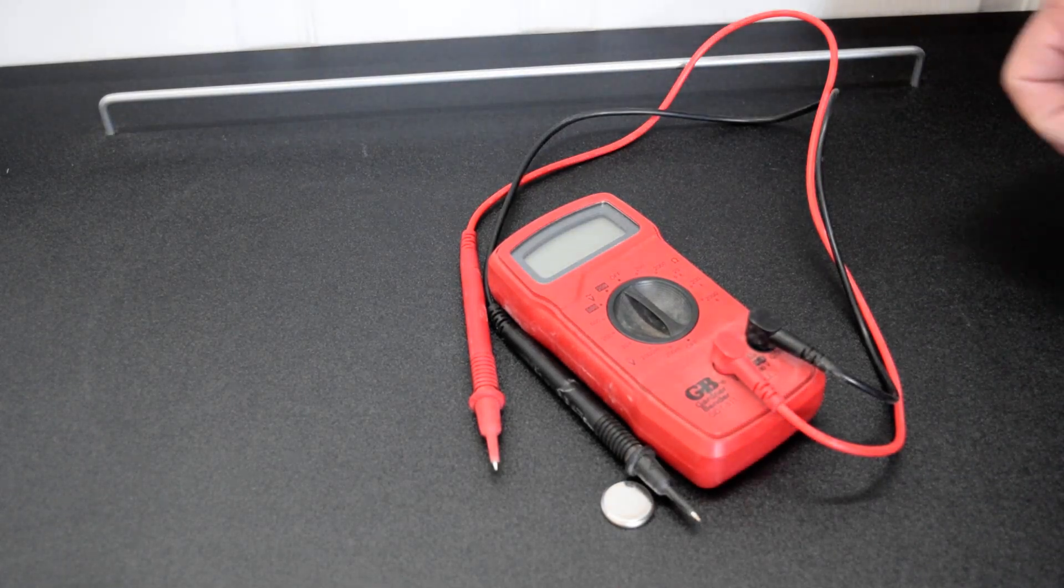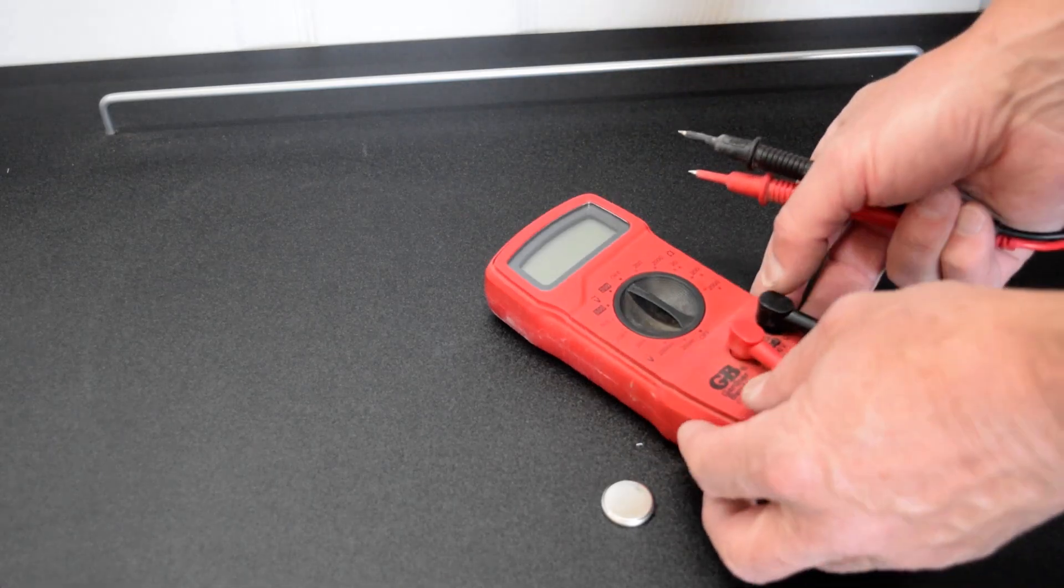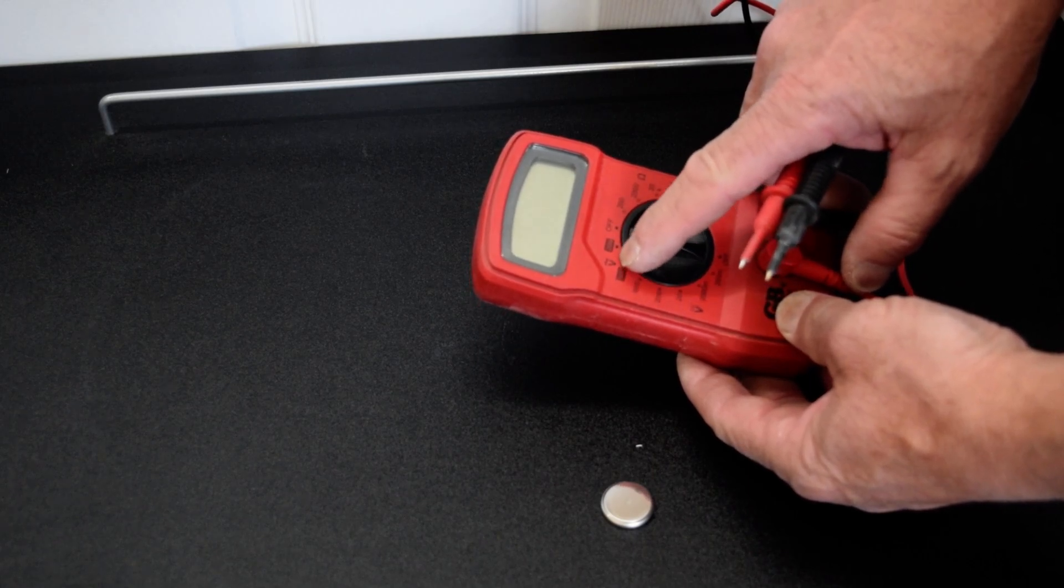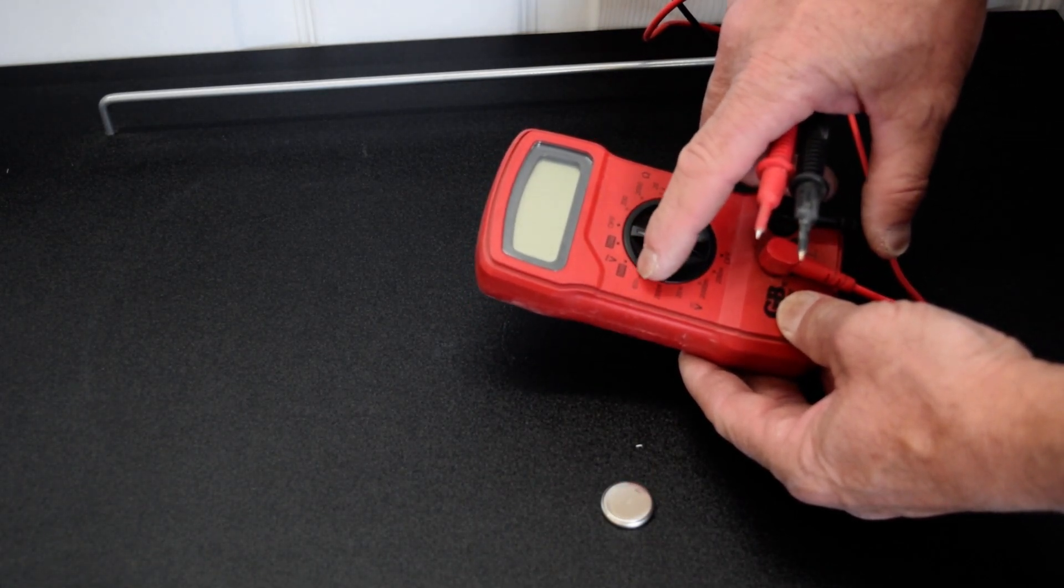All right, today I want to talk to you about this simple little voltage tester. It's got two settings for AC volts, 200 and 500, that covers about everything. And then for DC, it's got 600.